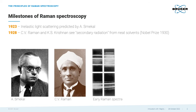The scattering was then experimentally demonstrated by Siviraman and his colleague Krishnan. For this breakthrough, Raman was awarded the Nobel Prize in Physics in 1930. The last milestone in Raman Spectroscopy so far was reached in 1960 through the invention of lasers, which finally made Raman experiments reasonable.